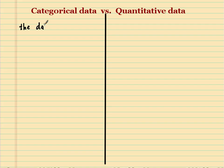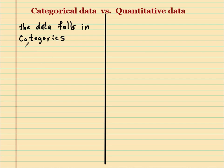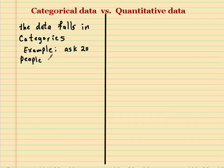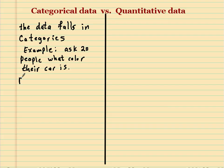Categorical data is basically when the data falls into certain categories. For example, I might ask 20 people what color their car is. To do this I'm going to have to give them options, and those options are my categories.